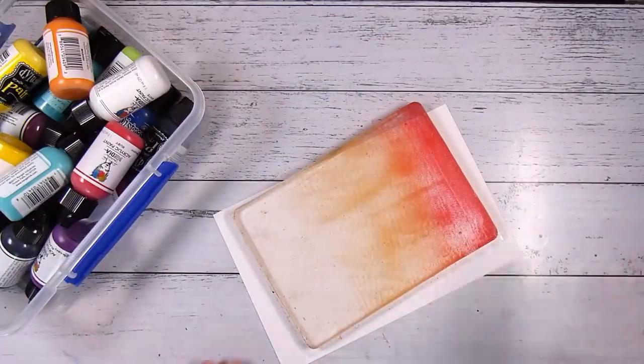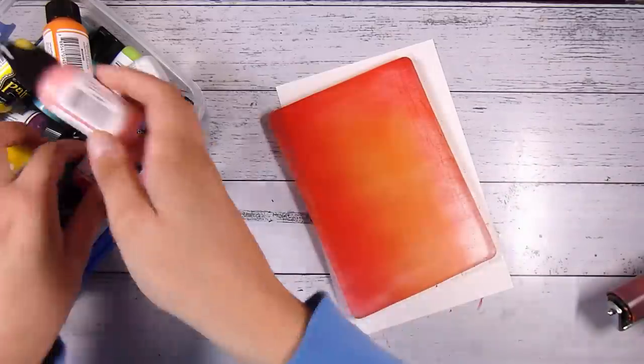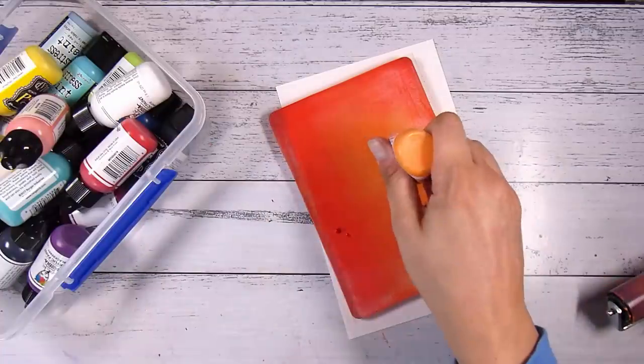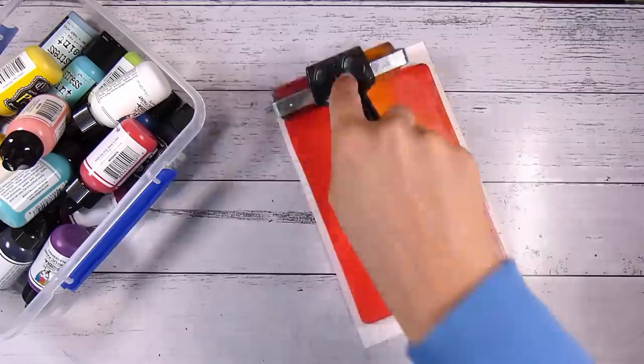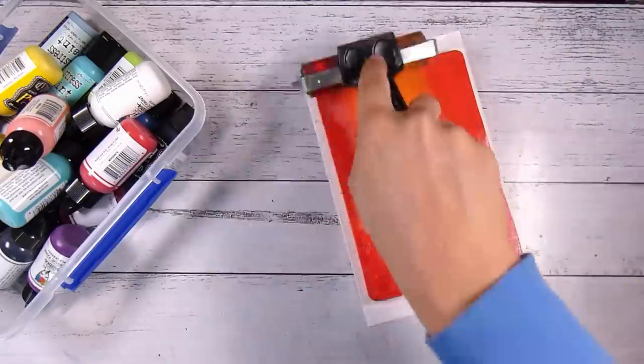Now this is where the gel plate gets really addictive. So I had some extra paint on my brayer, and I thought I'll pop that down on the plate and take a print. I'll never know what I can use that for, and then I'm like, oh well, I'm here, I'll just add a little bit more paint and then make it a proper print.